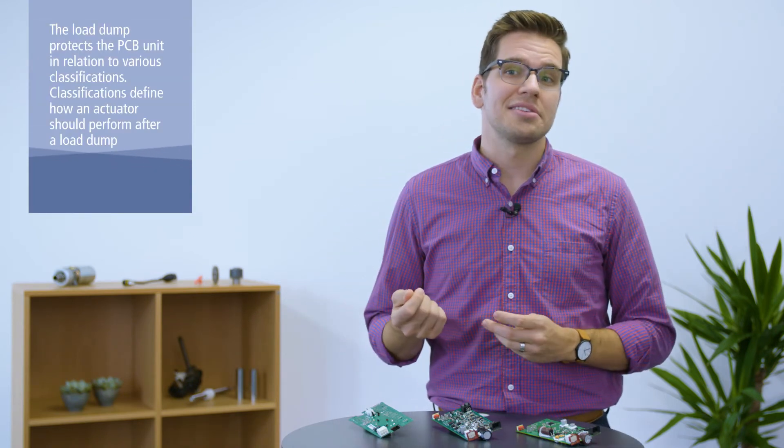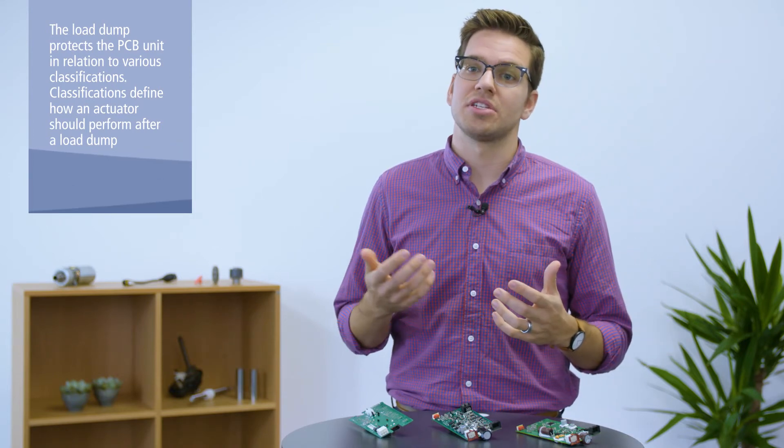If you turn off the headlights, temporary excess voltage peak from the generator can appear. For LINAK actuators, the load dump level is predefined to 45 volts. If the voltage peak goes above 45 volts, the electronics on the PCB will be shut off.